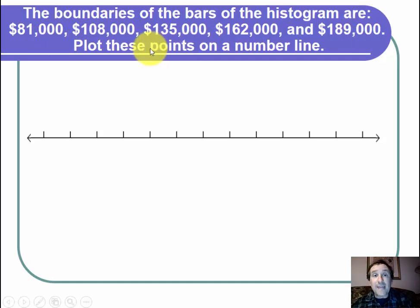The first thing is I'm going to label my number line in thousands and that way I don't have to put these huge numbers in. The other thing is I have 81, 108 all the way up to 189.